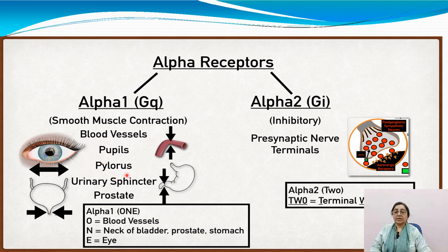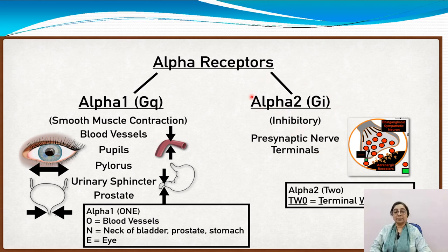At the pylorus, relaxation of smooth muscle and increased tone of the sphincter cause constipation. In the urinary bladder, urinary sphincter tone is increased and detrusor muscle relaxes, resulting in urinary retention. Alpha-2 receptors inhibit the release of neurotransmitters — they are inhibitory receptors present at the presynaptic membrane.